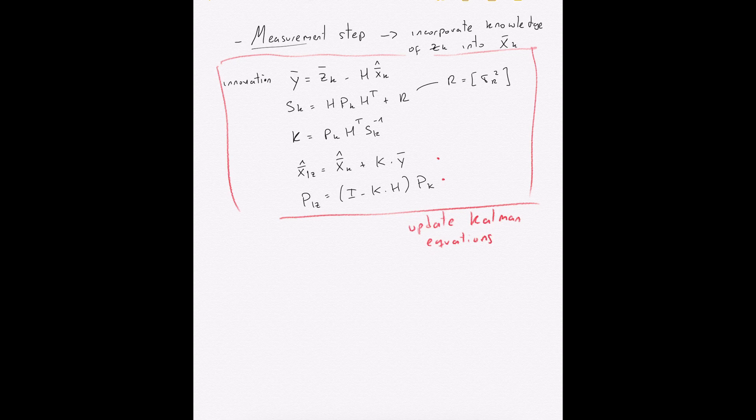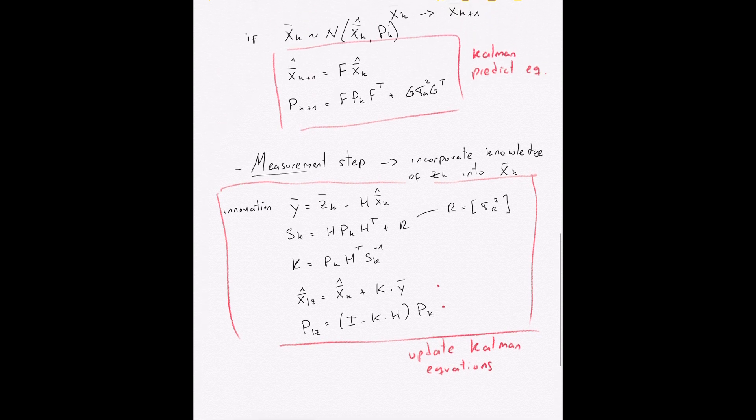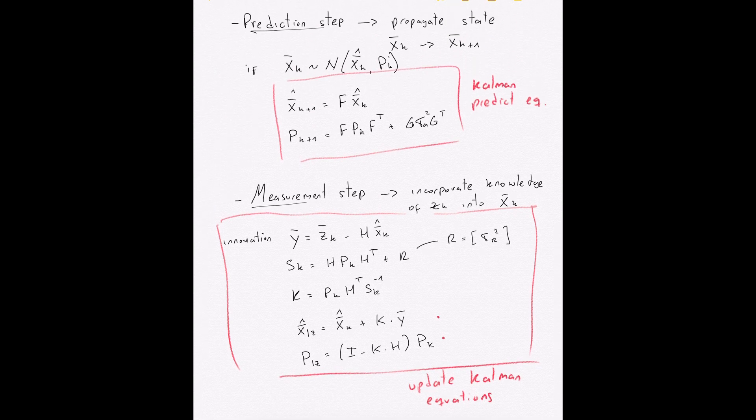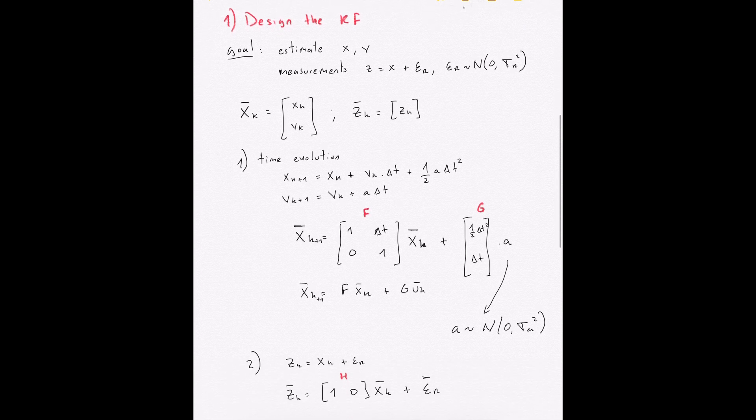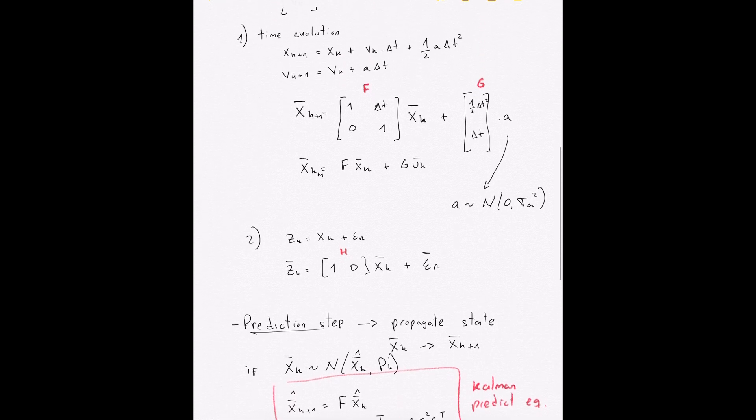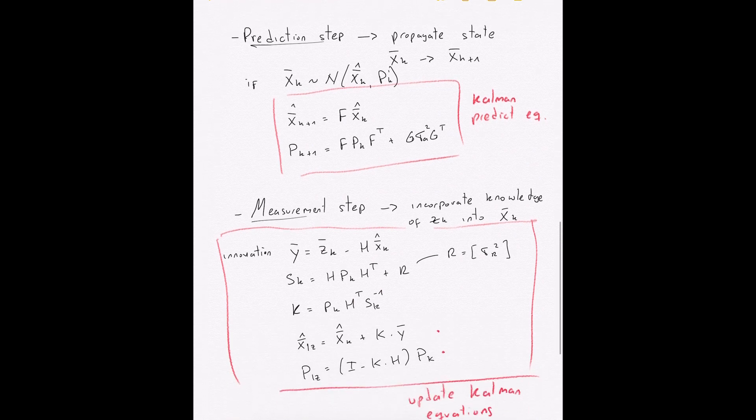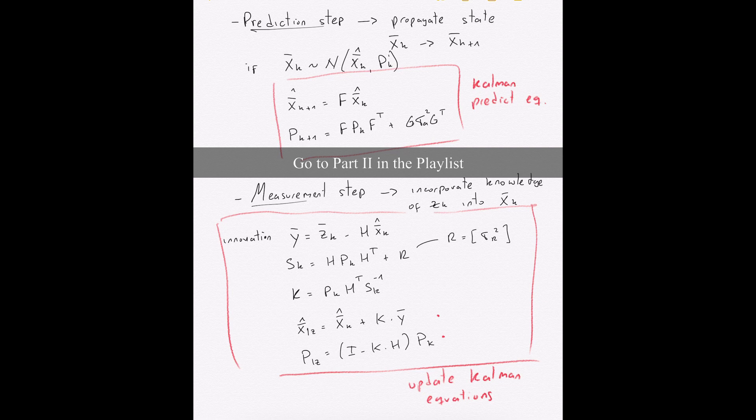If you don't understand what's happening here, go to the literature. It takes some time to figure out, but in the end it's pretty cool because you can see that if you know F, G, A, H, and your measurement and your initial state, then with these equations you can propagate your state and you can incorporate measurements. And you can have a probabilistic estimate of your state. So just to recap this part, we started talking about what we want to estimate, how we can express the time evolution, how we can express the measurements. And then we went into expressing in matrix form so that then we can apply the Kalman equations. And now we know exactly what we need to implement in our code, which are the Kalman predict equations and the Kalman update equations. Okay, on to the next step.